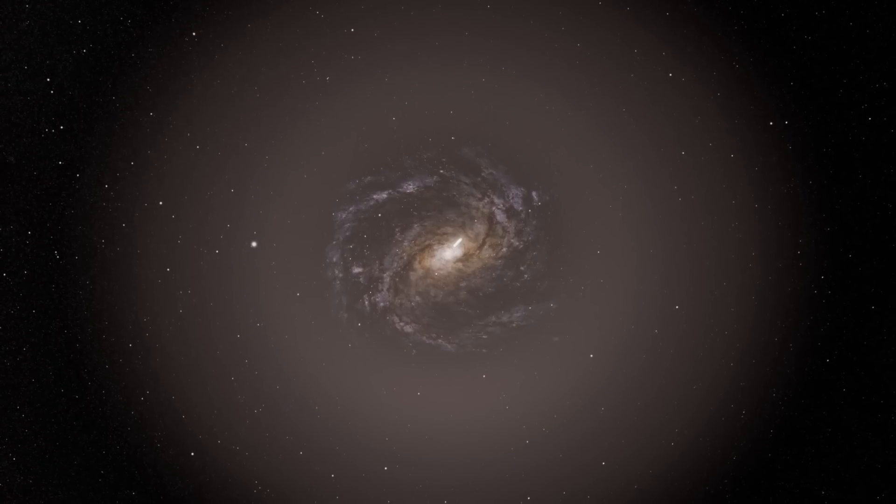In the LCDM model, dark matter halos prevent the rotation curves from declining, as expected by Newtonian physics alone. These halos have a finite radius ranging from a few kiloparsecs to around 200 kiloparsecs. But what happens beyond this range? As the influence of gravity decreases, the rotation curves should eventually start to decline beyond the radius of the dark matter halo.